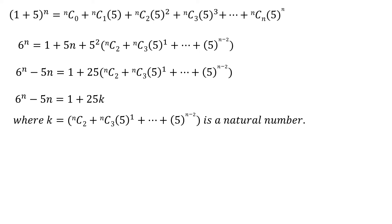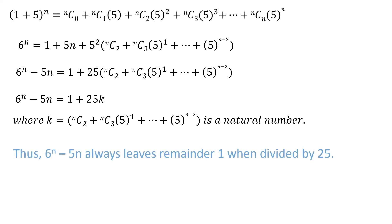This is the equation we wanted to arrive at. Thus, 6 raised to the power n, minus 5 times n, always leaves remainder 1 when divided by 25.